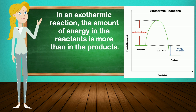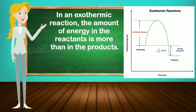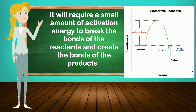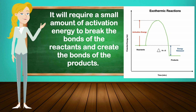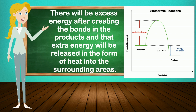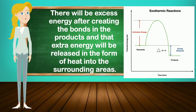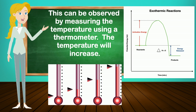In an exothermic reaction, the amount of energy in the reactants is more than in the products. It will require a small amount of activation energy to break the bonds of the reactants and create the bonds of the products. There will be an excess energy after creating the bonds in the products, and that extra energy will be released in the form of heat into the surrounding areas. This can be observed by measuring the temperature using a thermometer — the temperature will increase.